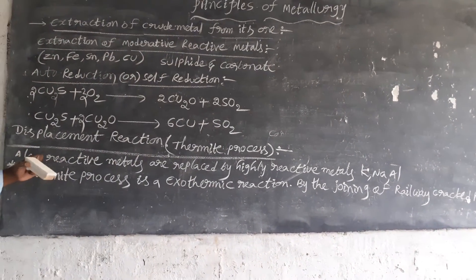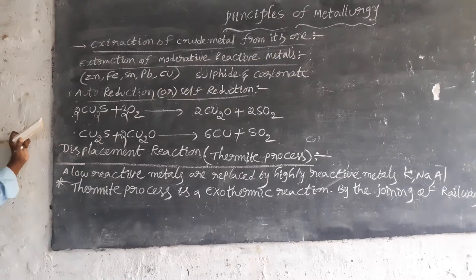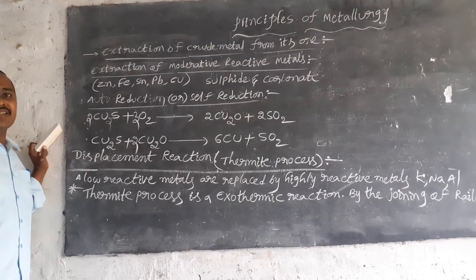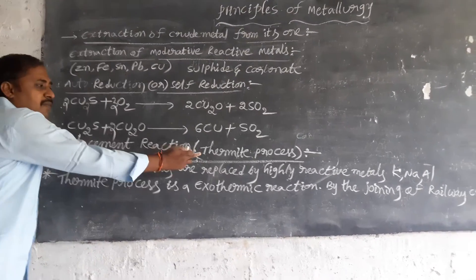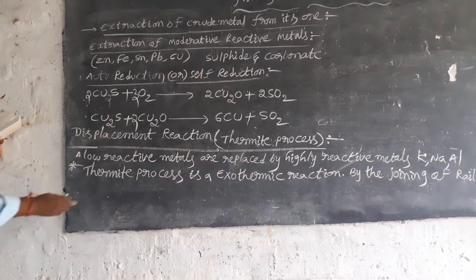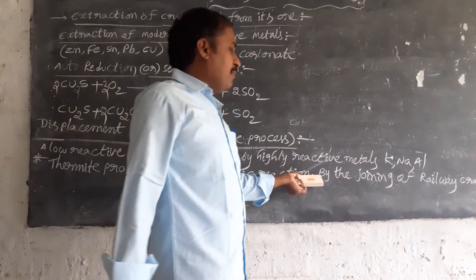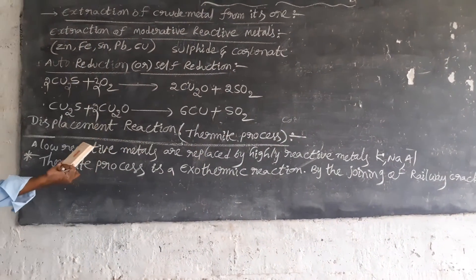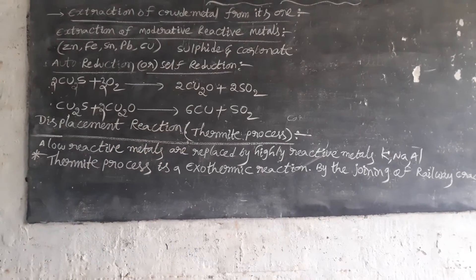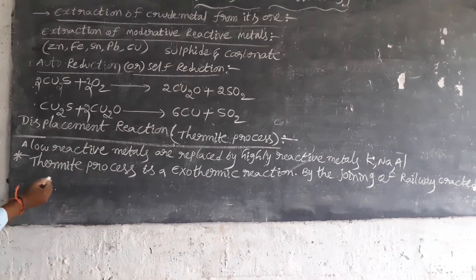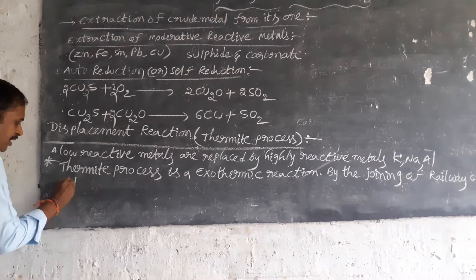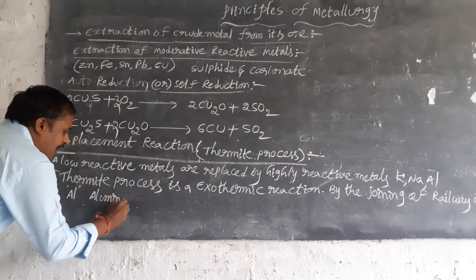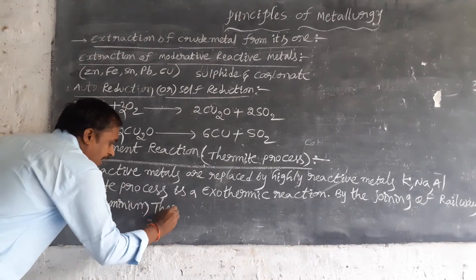For example, some railway tracks are cracked. Those cracked places are joined using some metals — that is called the thermite process. In this thermite process, aluminium is used. That is why it is also called the aluminium thermite process.